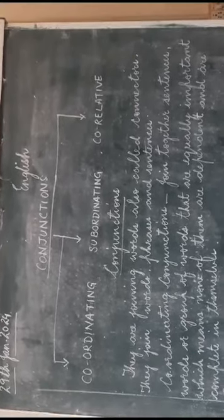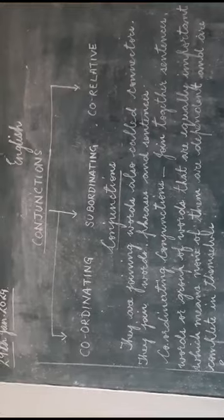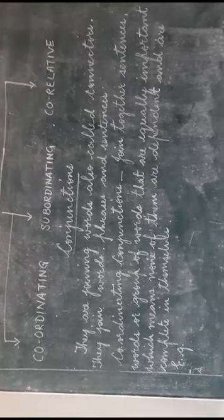We will begin, otherwise the video will become long. Now, conjunctions are actually connectors - the words that connect words to sentences, phrases, clauses. Conjunctions are of three types: coordinating, subordinating, and correlative. Now coming to the first conjunction, that is coordinating.